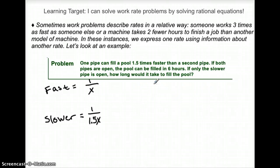Now they also told me that when the fast and the slow pipe work together, so a combined rate, they can fill one pool in 6 hours, so 1 over 6.